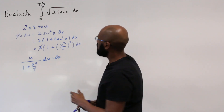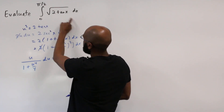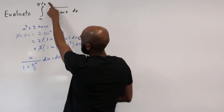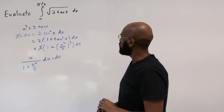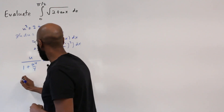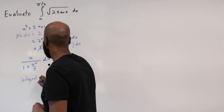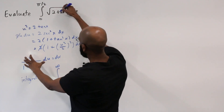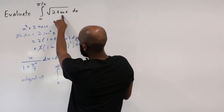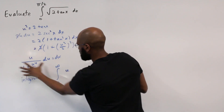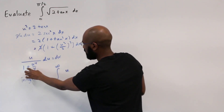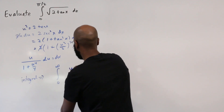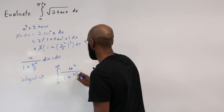Rearranging, the twos cancel and we have that u over (1 + u⁴/4) du equals dx. Now with this substitution, since x goes between 0 and π/2, tan x goes from 0 to infinity, so u goes from 0 to infinity. Our integral becomes the integral from 0 to infinity of u times u over (1 + u⁴/4).